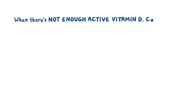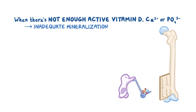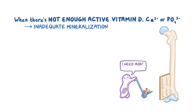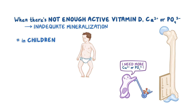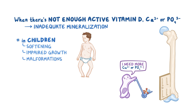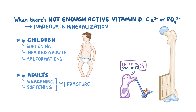Now when there's not enough active vitamin D, calcium, or phosphate, there's inadequate mineralization. This means that osteoblasts don't have enough calcium and phosphate to deposit into the organic matrix. In children, because the growth plates haven't closed yet, this leads to softening of the bones, impaired growth of bones, and bone malformations. Whereas in adults where the epiphyseal plates have already closed, it only causes weakening and softening of bones, which makes them easier to fracture.